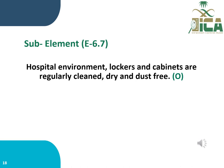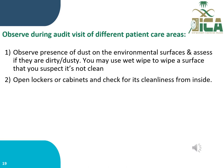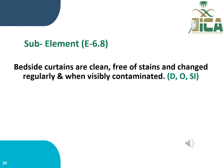Sub-element E6.7 states that the hospital environment, lockers, and cabinets are regularly cleaned, dry, and dust-free. This is evaluated through observation. During the audit visit of different patient care areas, auditors check for dust on environmental surfaces, may use a wipe on suspected unclean surfaces, and open lockers or cabinets to check the cleanliness status from inside.